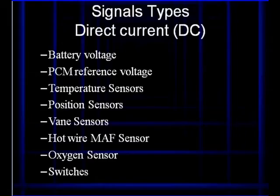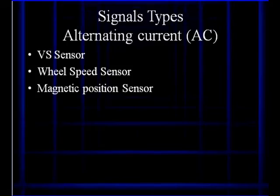Types of direct current, which is not always the best thing to look at with a scope, but it can be used. Battery voltage, PCM reference voltage, temperature sensors, position sensors, vane airflow sensors, hot wire MAF airflow sensors, oxygen sensors, switches. Now all of these have specialized ways of looking at them. They're not all going to use the same techniques.